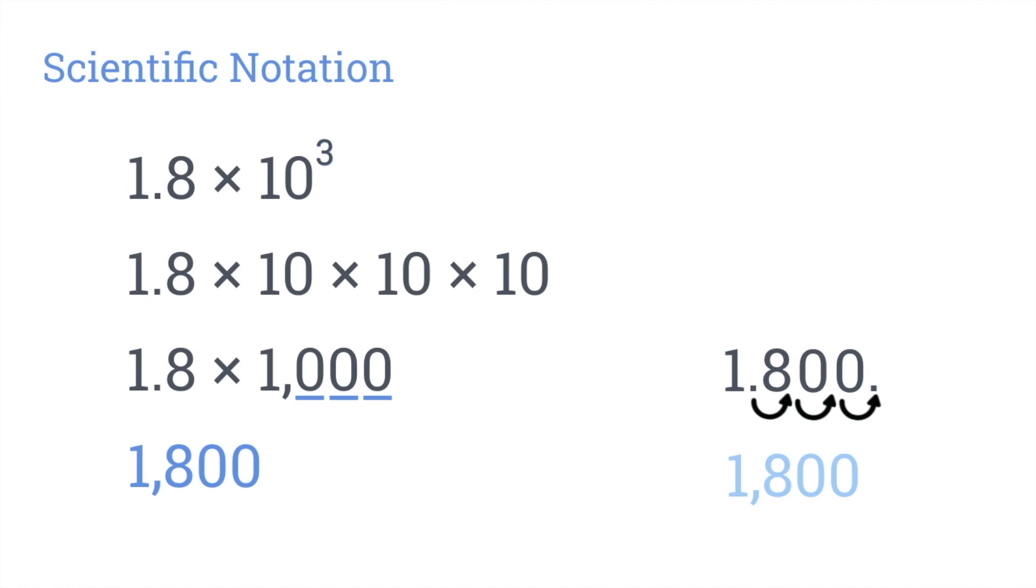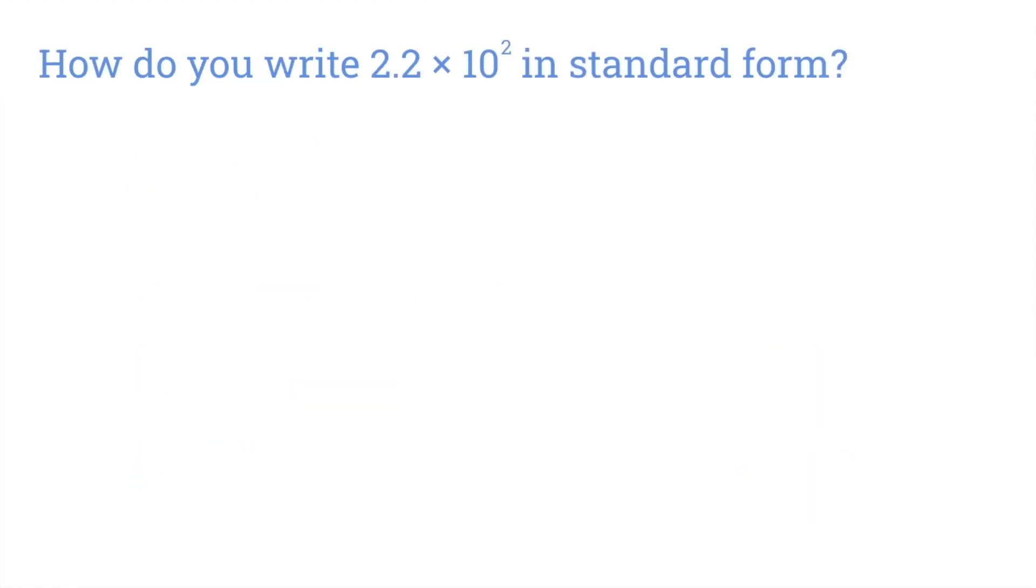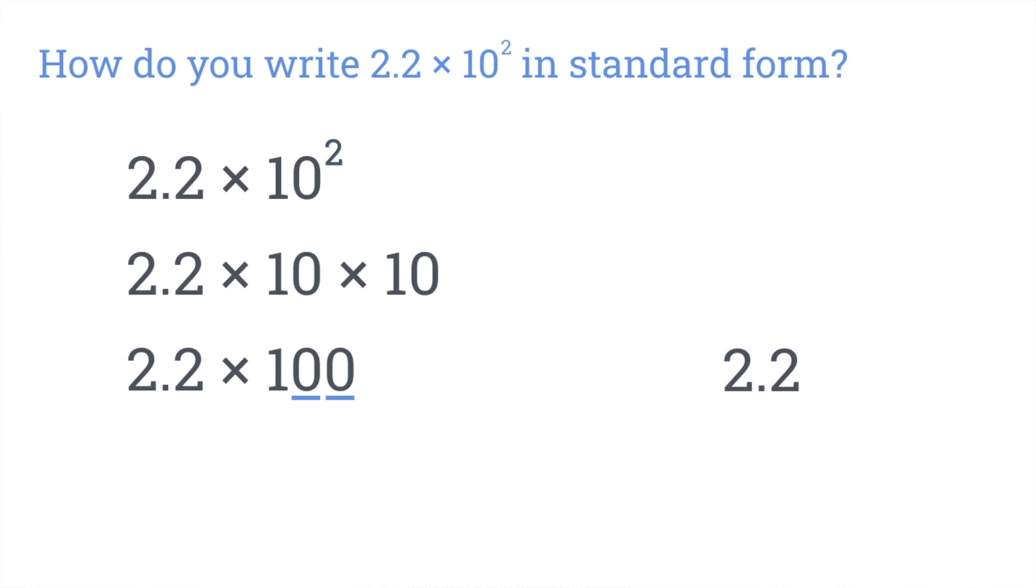Let's look at some more problems like this now. How do you write 2.2 times 10 to the power of 2 in standard form? Well, 10 to the second power is 10 times 10, or 100. Since 100 has two zeros, we'll want to move the decimal point two places to the right. Before we do this, we'll need to write an extra zero here. Don't worry, writing extra zeros to the right of a decimal does not change its value. Now, start with 2.20 and move that decimal point. We have 220, which is in standard form.